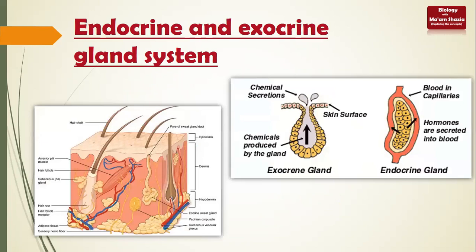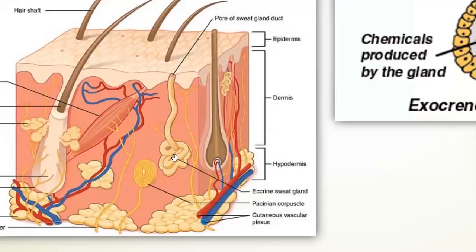Now let's look at this diagram comparing endocrine and exocrine glands. This is a part of human skin. You can see squamous epithelium, the hair follicle, and the sweat gland. The sweat gland is an exocrine gland - its secretion is always in a duct. The secretion is produced and then a tube releases it to the outside.